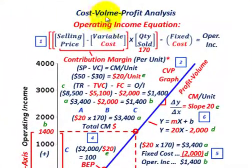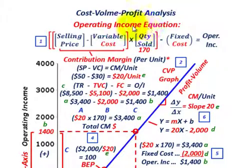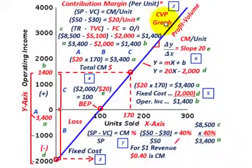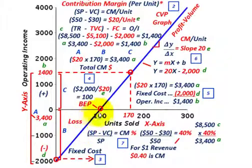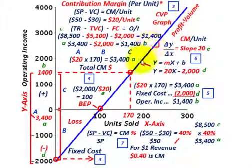What we're going to be going over here is cost-volume-profit analysis, where we're going to be looking at our operating income equation and tying this into a cost-volume-profit graph. So let's first get a basic understanding of what this graph is. I've got this blue line here with an increasing slope, and that's what we can call our profit-volume line.